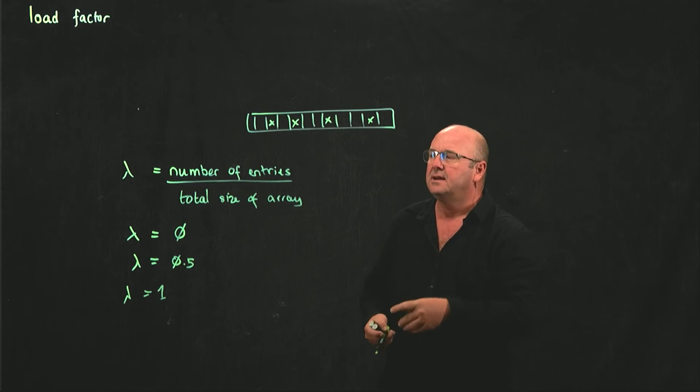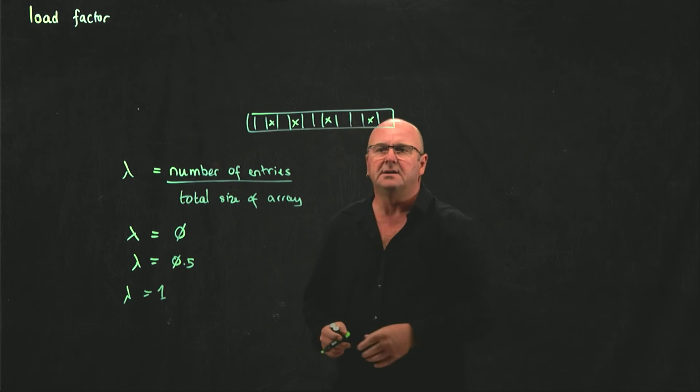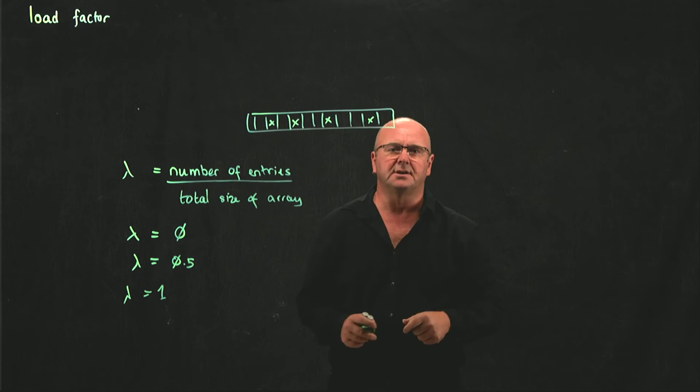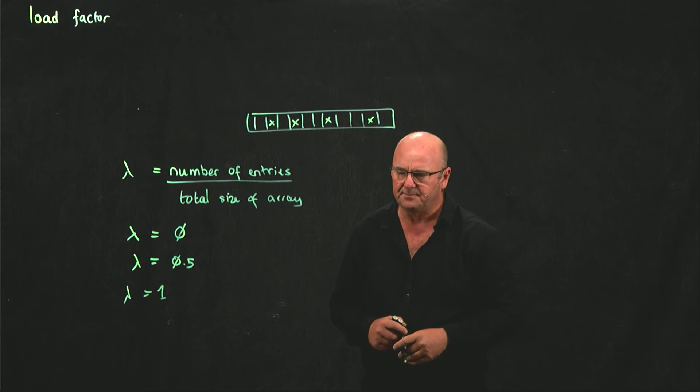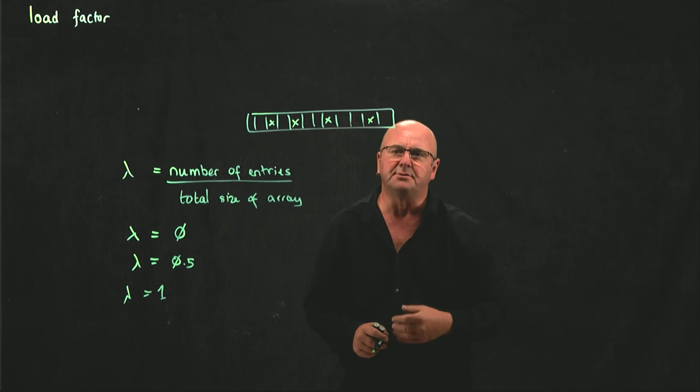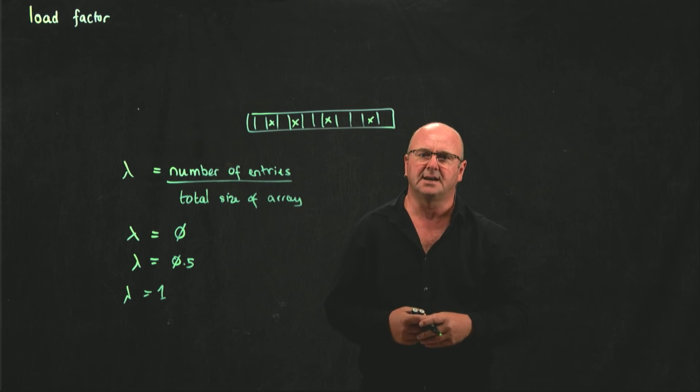And as we're going to see, the load factor lambda is going to vary depending on how our data structure resolves collisions. Typically, with an array-based data structure, once lambda starts approaching 0.6 or 0.7, you need to consider resizing the table.